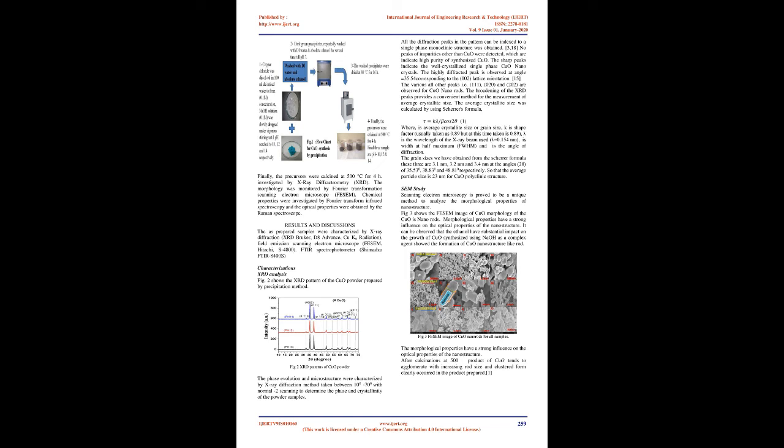The broadening of the XRD peaks provides a convenient method for the measurement of average crystallite size. The average crystallite size was calculated using Scherrer's formula: D = Kλ/β cosθ, where D is average crystallite size or grain size, K is shape factor (taken as 0.89), λ is the wavelength of the X-ray beam used (λ = 0.154 nm), β is width at half maximum (FWHM), and θ is the angle of diffraction. The grain sizes obtained from the Scherrer formula are 3.1 nm, 3.2 nm, and 3.4 nm at 2θ angles of 35.53°, 38.83°, and 48.81° respectively. The average particle size is 23 nm for CuO monoclinic structure.